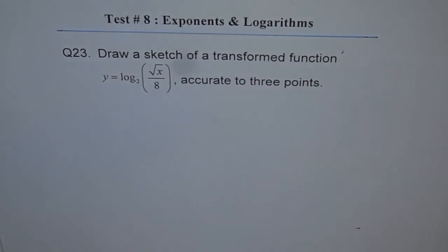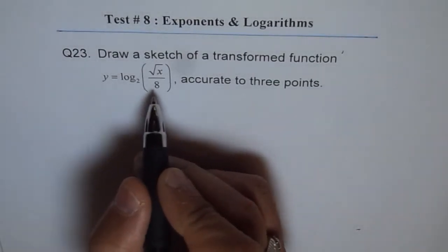Now whenever we draw a sketch of a logarithm function, we normally take 3 points and the vertical asymptote. So that is the basis for a sketch on logarithm functions. Let's first simplify this equation.